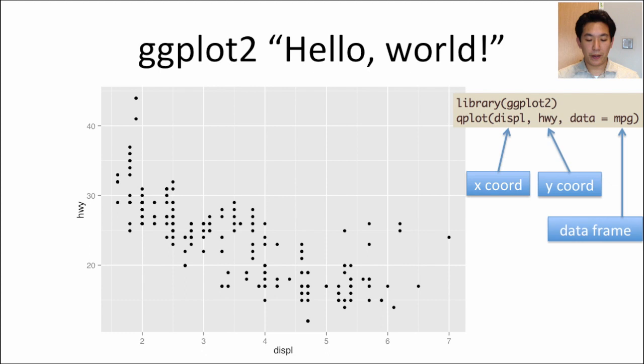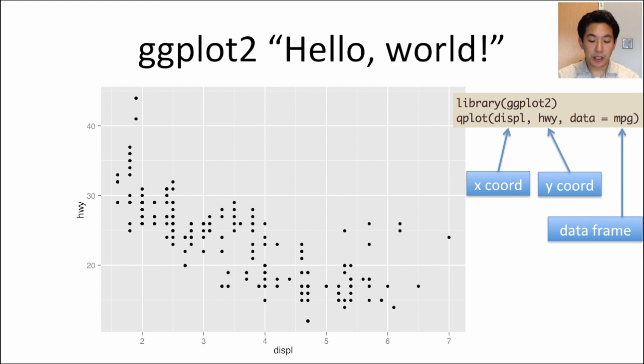A very simple plot — the hello world for ggplot — is to call the qplot function with the displacement variable on the X axis and the highway mileage on the Y axis, specifying the data frame with data equals MPG. The plot looks very different from a traditional base plot: there's a gray background with white grid lines, the points are solid closed circles rather than open circles, and there are labels on both axes.